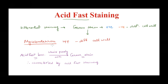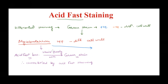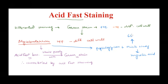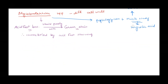In the cell wall of Mycobacterium, similar to gram positive bacteria which have a thick layer of peptidoglycan, Mycobacterium also contains a thick layer of peptidoglycan. Along with peptidoglycan, it contains a thick waxy layer made of a lipid called mycolic acid. This mycolic acid is a very waxy lipid, and in Mycobacterium it makes up approximately 60 percent of its cell wall.